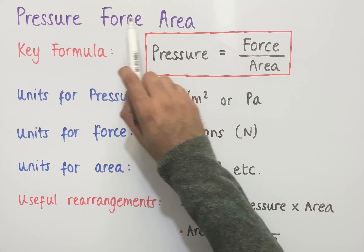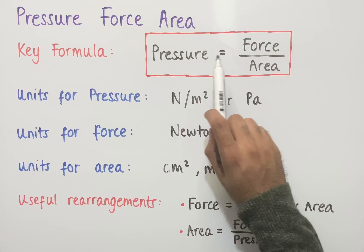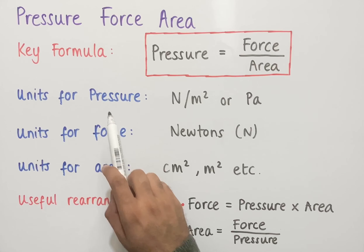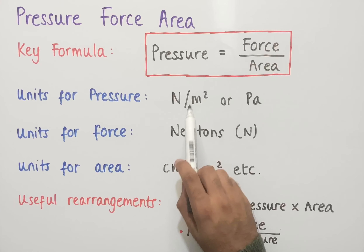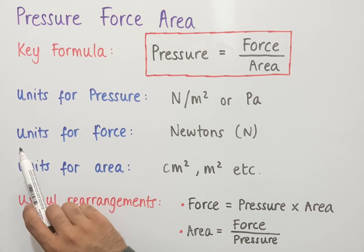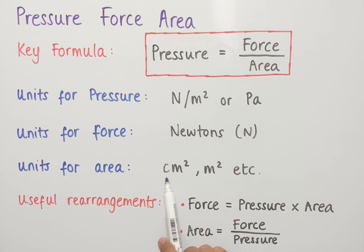Let's look at pressure, force and area. The key formula we need is that pressure equals force divided by area. Some useful rearrangements are that force equals pressure times area, and area equals force divided by pressure. The units for pressure we commonly see are newtons per meter squared, or pascals. The units for force are newtons, and the units for area are centimeters squared, meters squared, and so on.